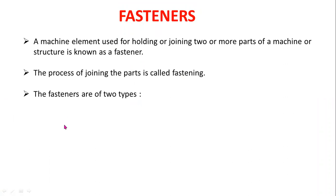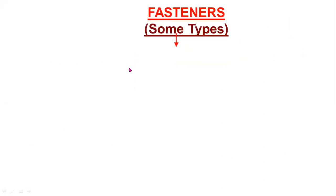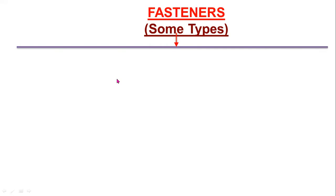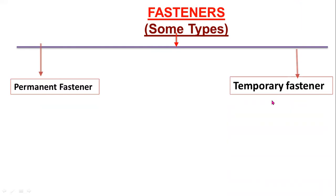Fasteners are of two types: permanent fasteners and removable or temporary fasteners. Fasteners are broadly classified into permanent fasteners and temporary fasteners.